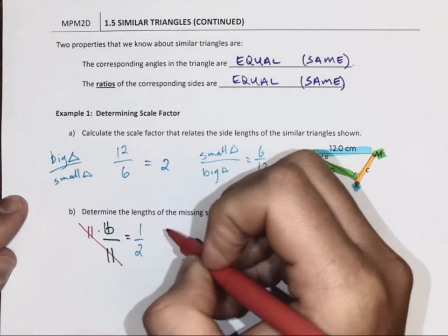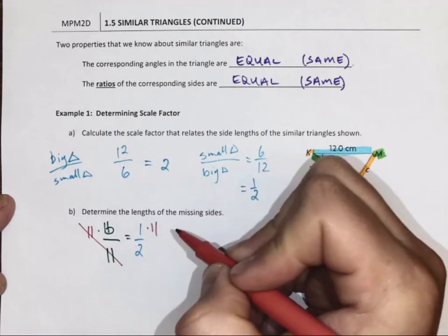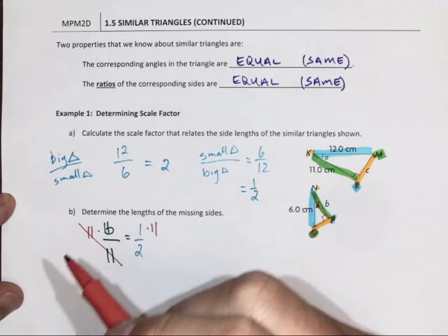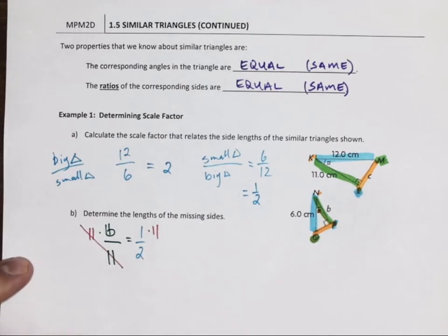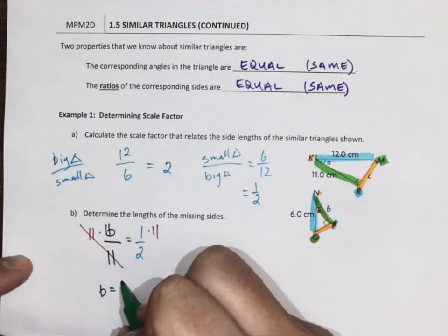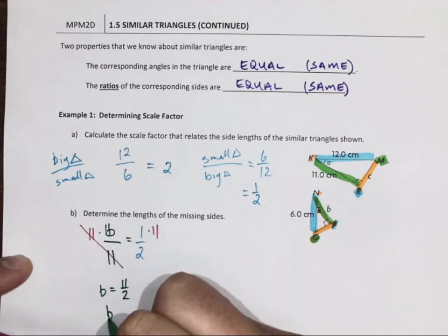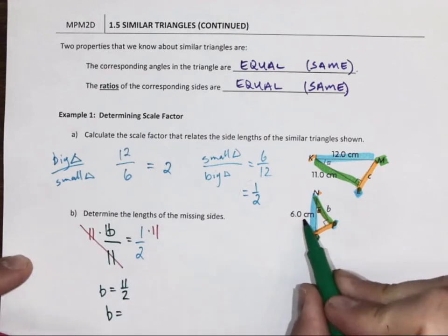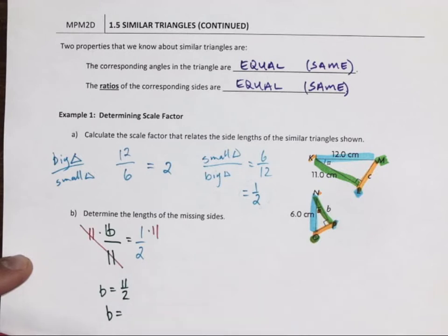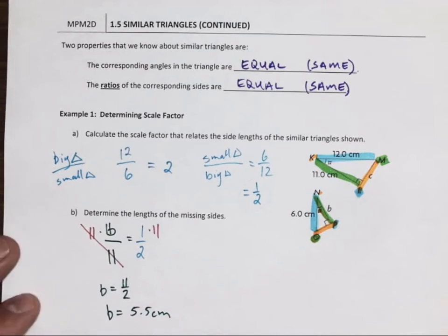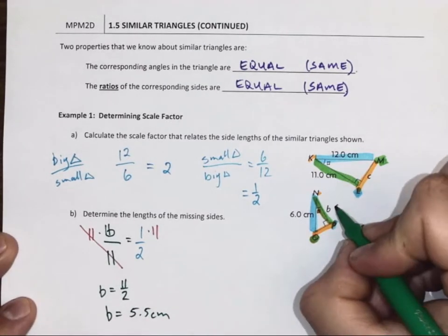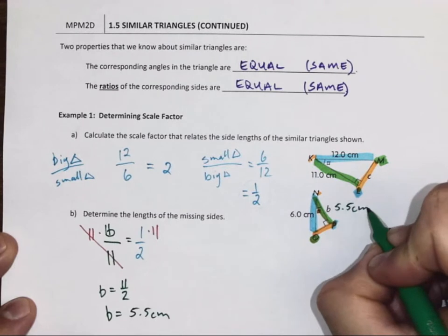And now we math. Times 11. 1 times 11 divided by 2 is 11 halves, which I can reduce if I want to. Because I have a unit, and a half is a decent fraction, so it's going to be 5.5 cm. And side B is 5.5 cm.